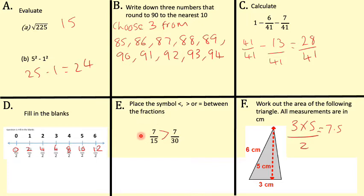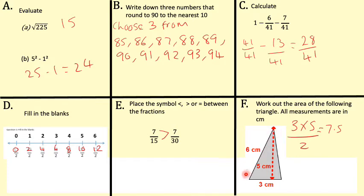This next one is quite interesting and links to what we're doing today. We have different denominators but the same numerator, so which is going to be bigger? It's going to be the one where the denominator is smallest, because the denominator divides into our top number. Working out the area of the triangle: it's half the base, which is 3, times the perpendicular height. So 3 times 5 gives us 15, divided by 2 gives us 7.5 centimetres squared.